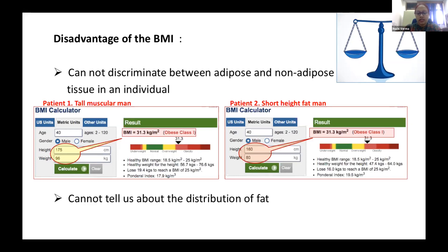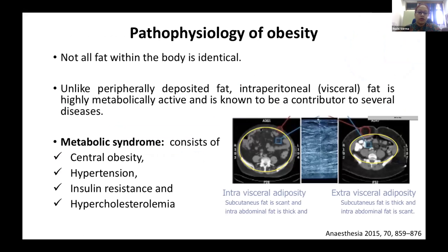Not all fat within the body is identical. Unlike peripherally distributed fat located outside the body cavity, intraperitoneal fat — also called visceral fat — is highly metabolically active and is a contributor to several diseases. These patients are more likely to exhibit the metabolic syndrome, which consists of central obesity, hypertension, insulin resistance, and hypercholesterolemia.